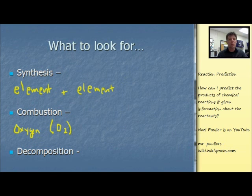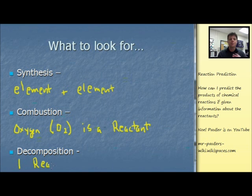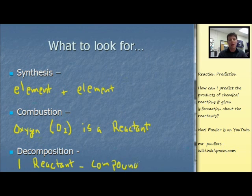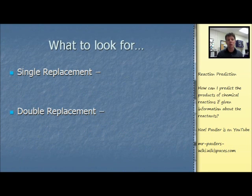For combustion reactions you want to identify that one of the reactants is oxygen. That's diatomic oxygen O2. That means that oxygen O2 will show up to the left of the arrow indicating a chemical change. For decomposition reactions we're looking for just one reactant and it is going to be a chemical compound. If you only see one compound listed, that means it's going to be a decomposition reaction.